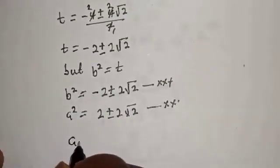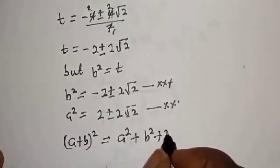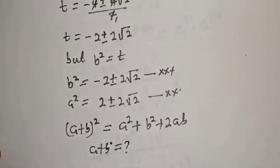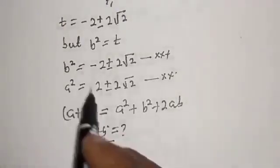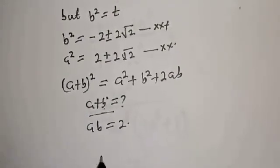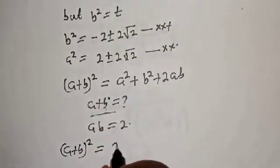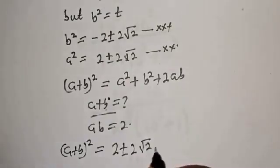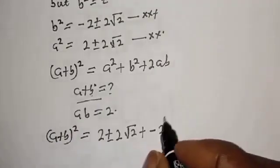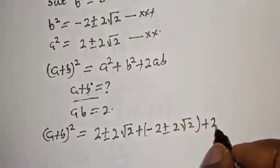Take note that (a+b) squared equals a squared plus b squared plus 2ab. The question asks us to find a plus b. We already know a squared and b squared, and from the initial equation ab equals 2. So (a+b) squared equals (2 plus or minus 2 root 2) plus (minus 2 plus or minus 2 root 2) plus 2 times 2.